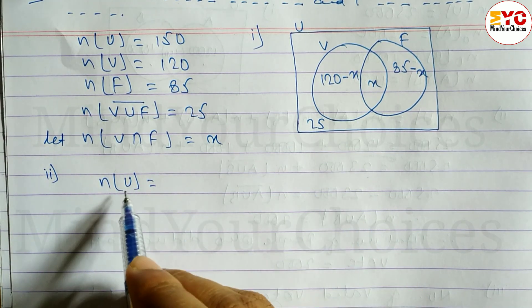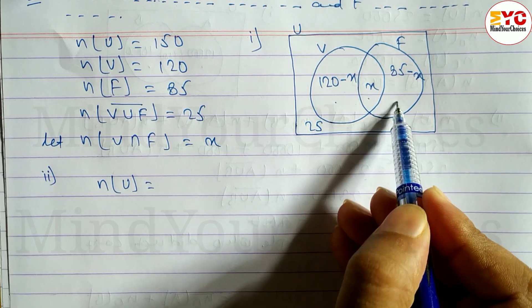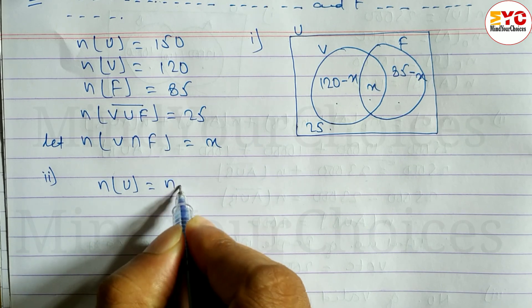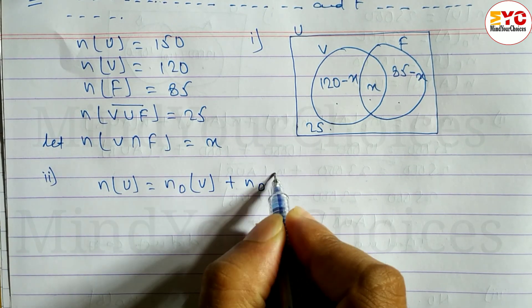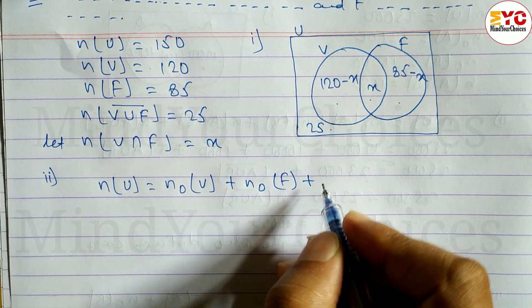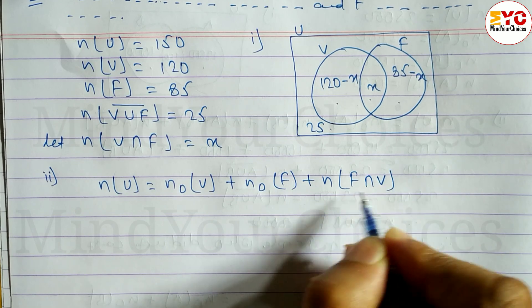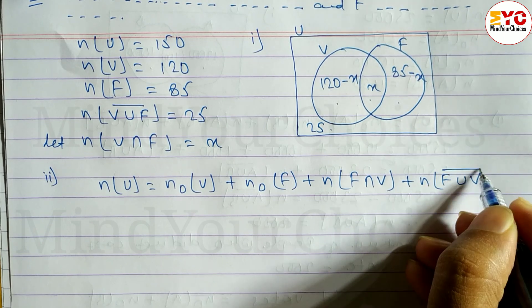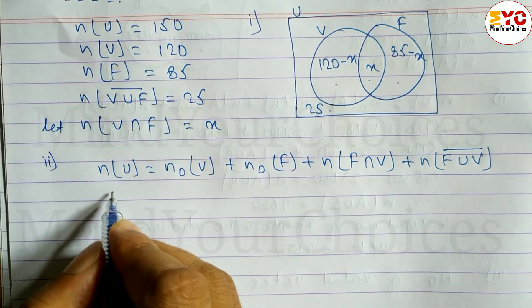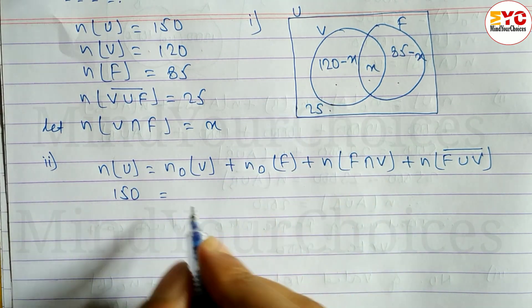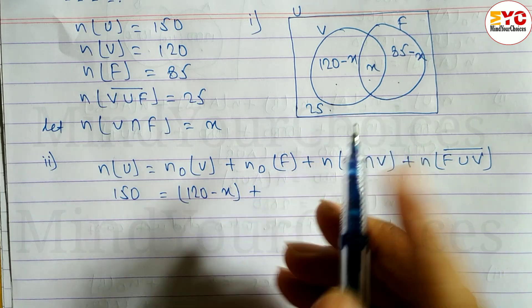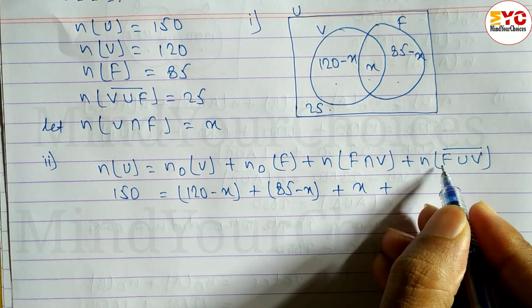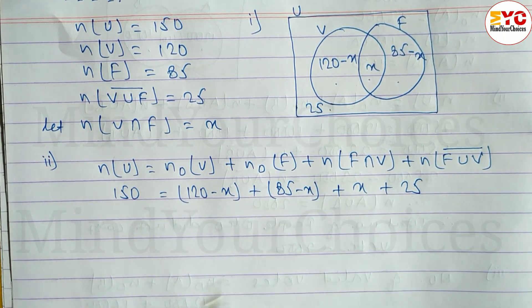Using the N(U) formula: N(U) equals the sum of all four parts — only B, only F, B ∩ F, and outside. So N(U) = N(only B) + N(only F) + N(B ∩ F) + N(B ∪ F)'. Substituting: 150 = (120 − X) + (85 − X) + X + 25.